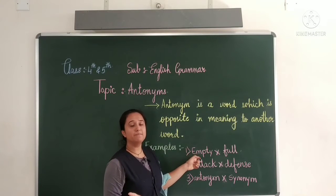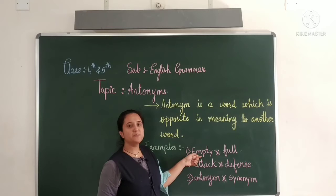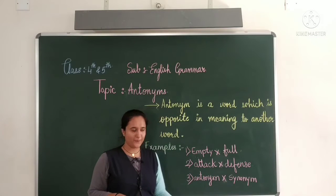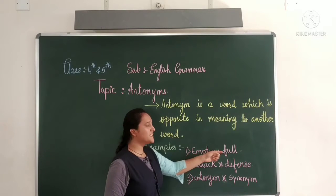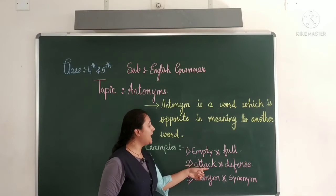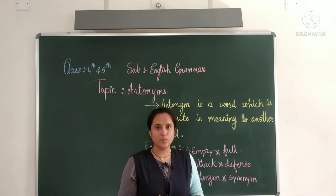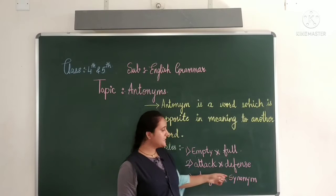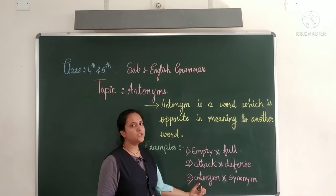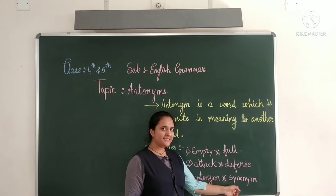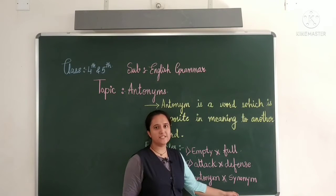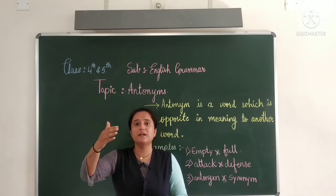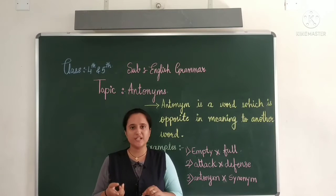For an example: empty. Empty ka meaning hota hai khali. Toh uska opposite hota hai full. Full means jok bhara. So the opposite of empty is full. Second: attack. Attack means marna kisi ko. Toh attack ka opposite means bachna — defense. And antonyms means opposite. For example, above — uska opposite below, neeche ko.